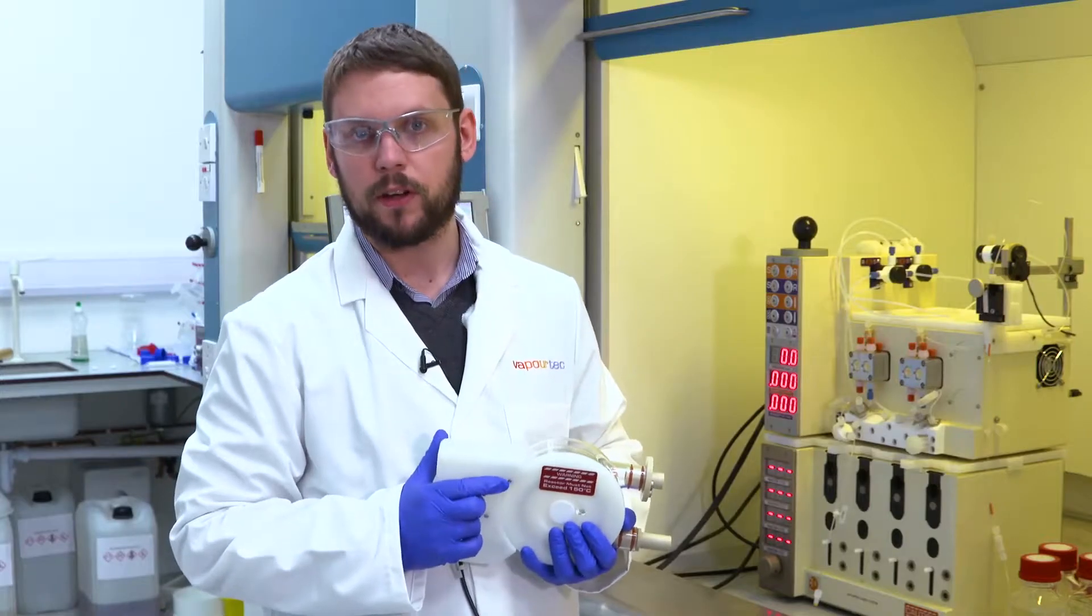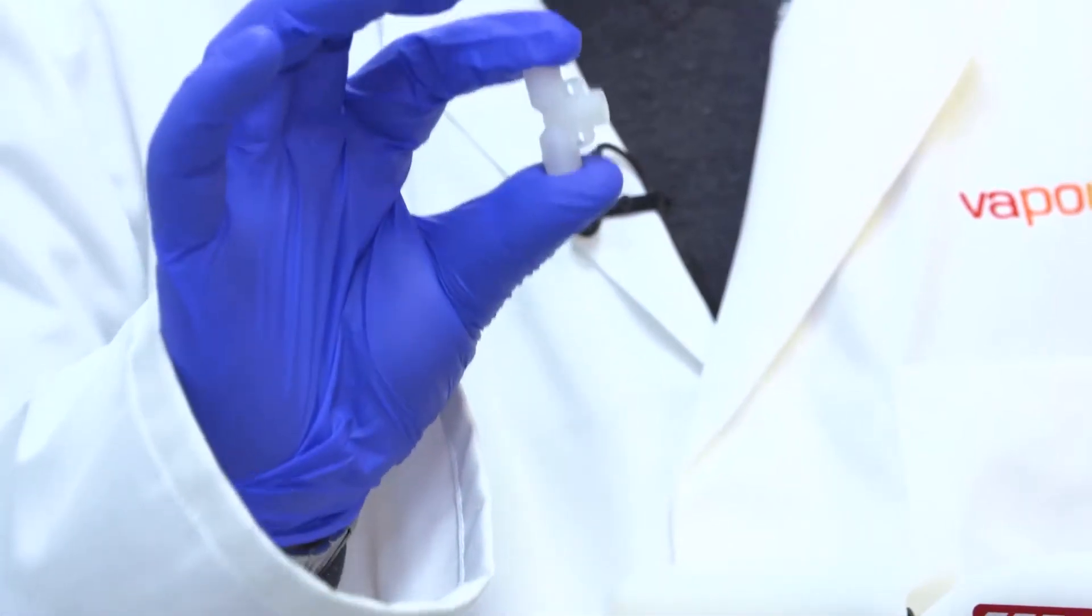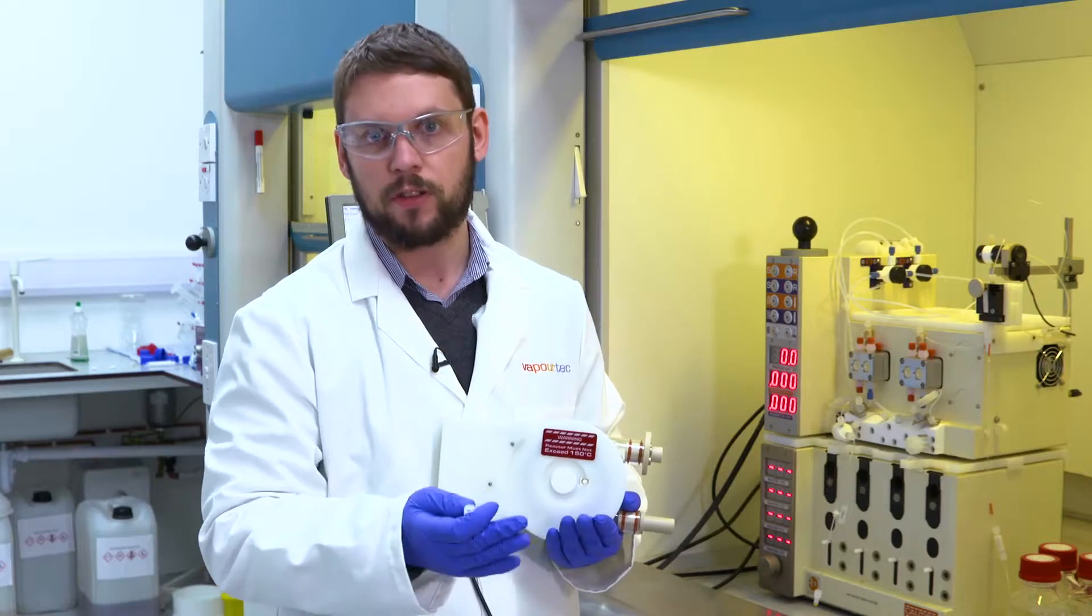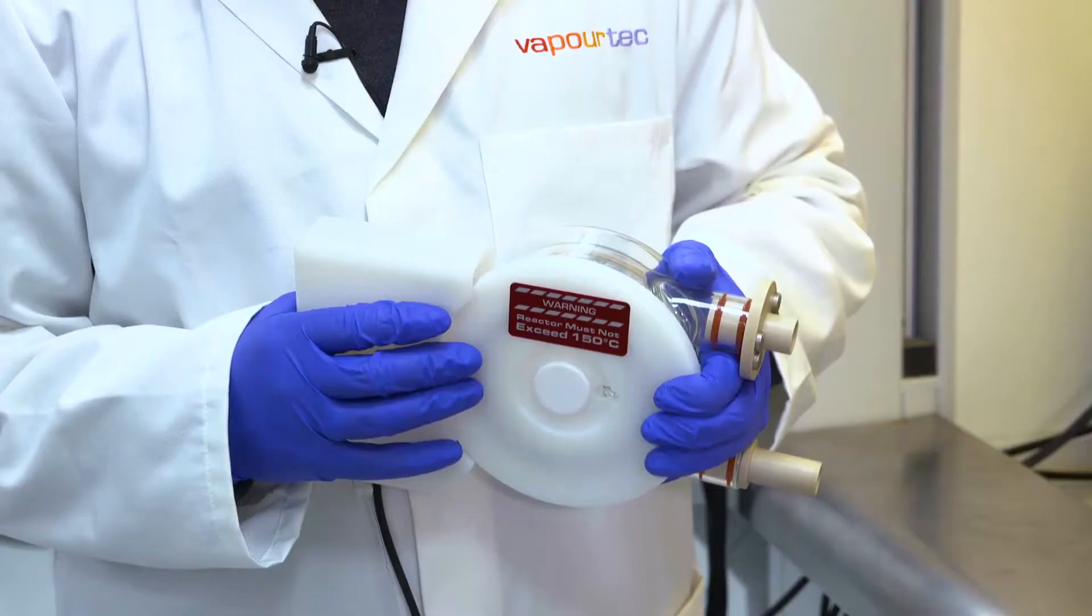These reactors are ideal for biphasic reactions because when you use a tee piece like this you get very aggressive mixing in the mixer, but then as soon as you go into a standard tube the two phases separate and you have the same mass transfer limitations.